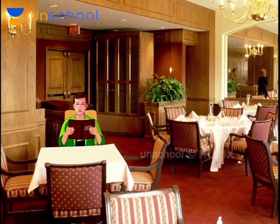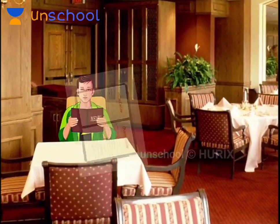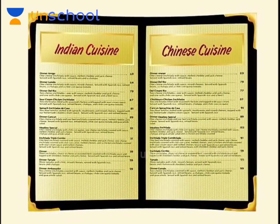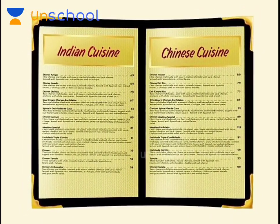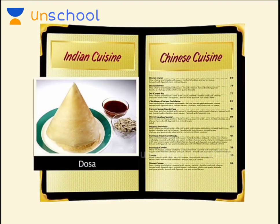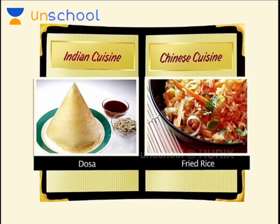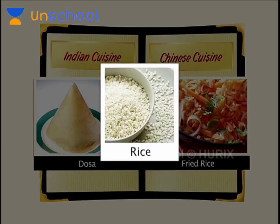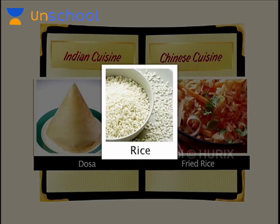James goes to a restaurant and checks the menu for Indian and Chinese cuisine. He reads the ingredients for dosa and fried rice. He is surprised to see that although the two dishes are so different from each other and they come from different cuisines, they both have rice as a main ingredient.